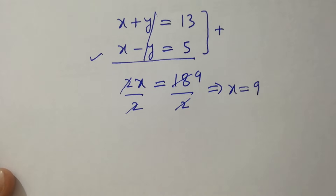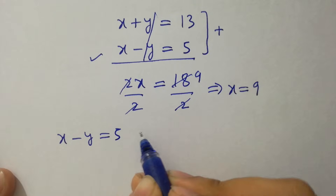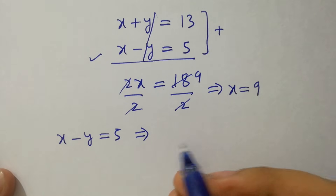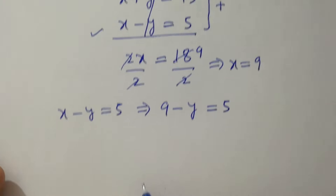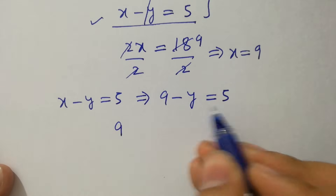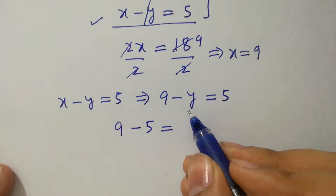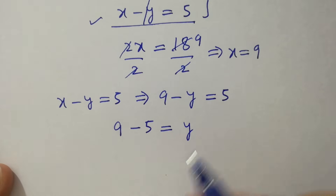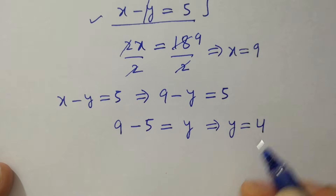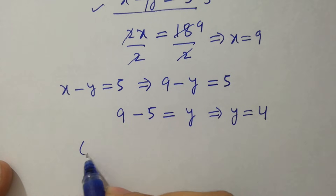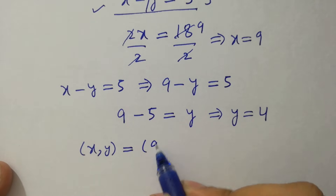To find y, take the equation x minus y equals 5. Put the value of x: 9 minus y equals 5. So y equals 9 minus 5 equals 4. The values of x and y are 9 and 4.